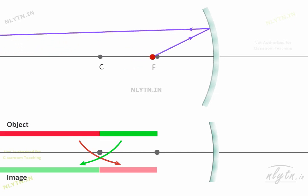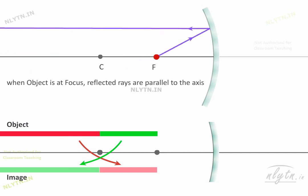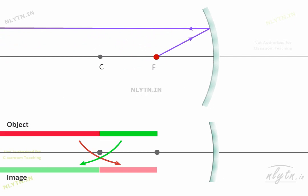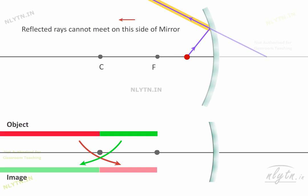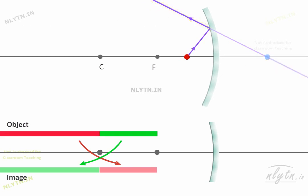Now, when the object is at focus, the reflected rays are parallel to the principal axis. If the object moves closer to the pole, then the reflected rays become diverging in nature. So they cannot meet on this side of mirror. But to an observer, the reflected rays appear to be coming from this point. So this is the location of the image, which is virtual in this case. As the object moves closer to the pole, the image also moves closer to the pole.